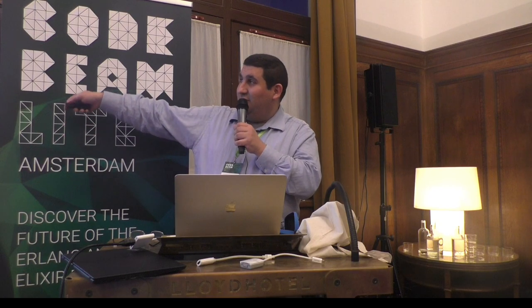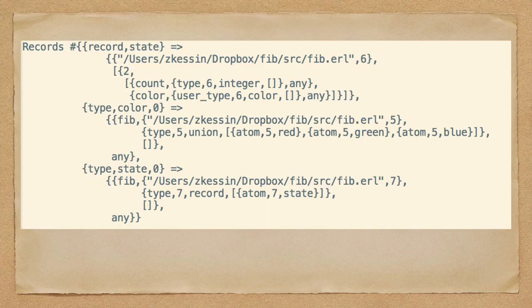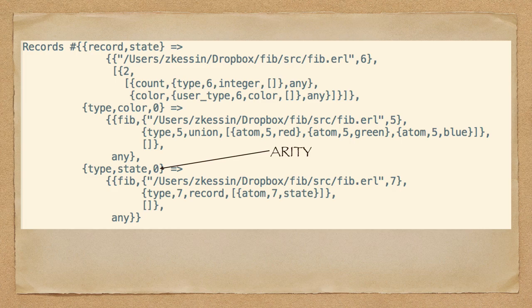This is the records from that file. You can see it gives the file name, then a 'count' which is a type integer, and a 'color' which is this type. And here we have the type 'color' — it says you have to use these atoms. The zero there is the arity of the type. I could not figure out where this data structure was documented, so I had to reverse engineer it. And you get the line numbers here, and you know this type needs atom red, atom green, and so on.